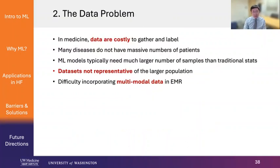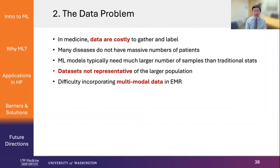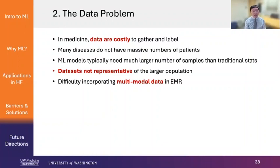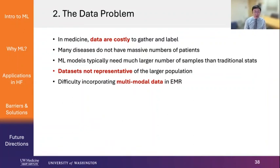The second problem is a data problem. In medicine, unlike Netflix, data are costly to gather and label. Many diseases just don't have a massive number of patients — for example, heart transplant, LVAD. Machine learning models typically need a much larger number of patients than traditional statistics to work well. Another problem is that datasets we use are often not representative of the larger disease population. It's also difficult to incorporate multimodal data from the EMR — for example, clinician notes, lab results, ECGs.